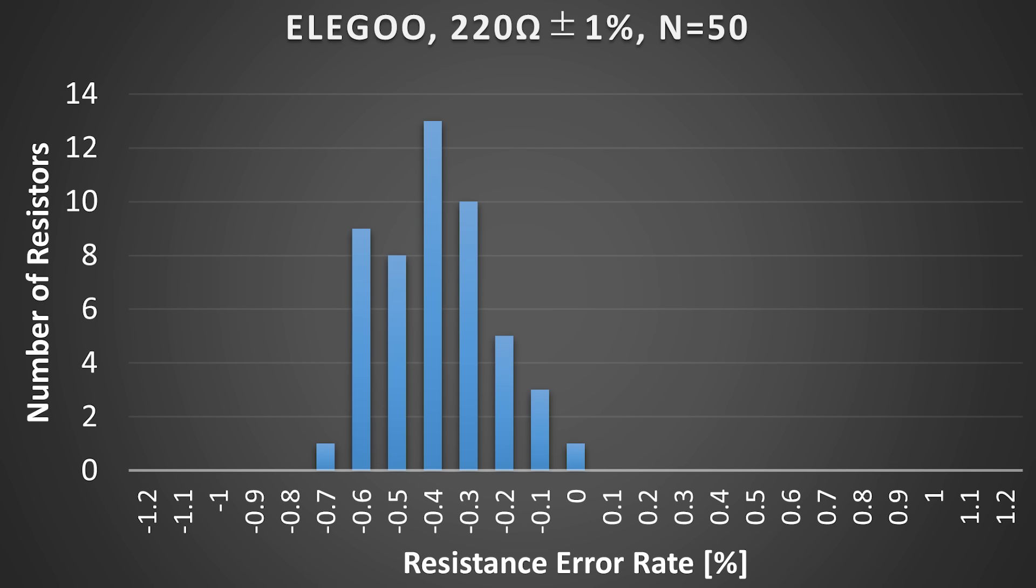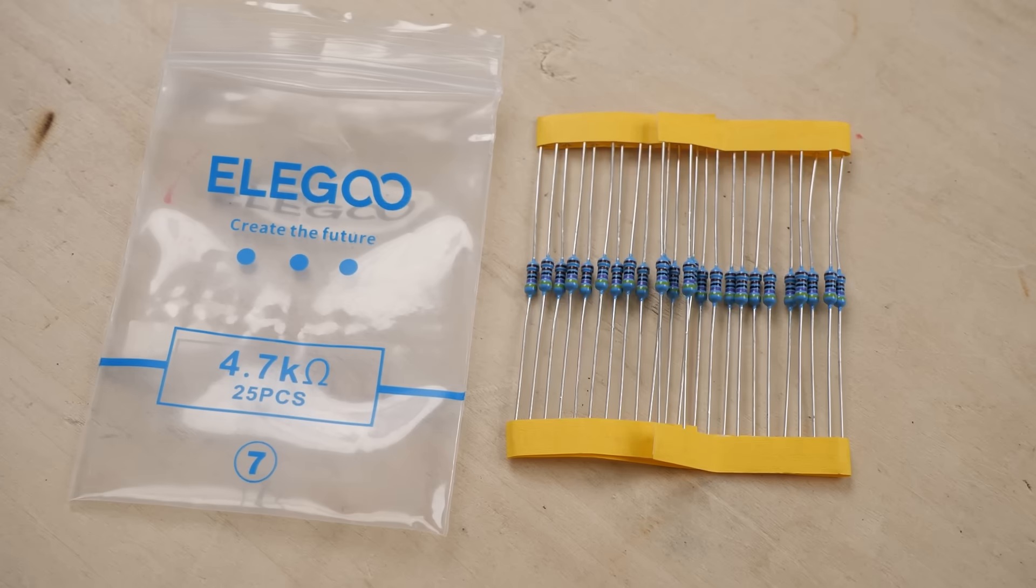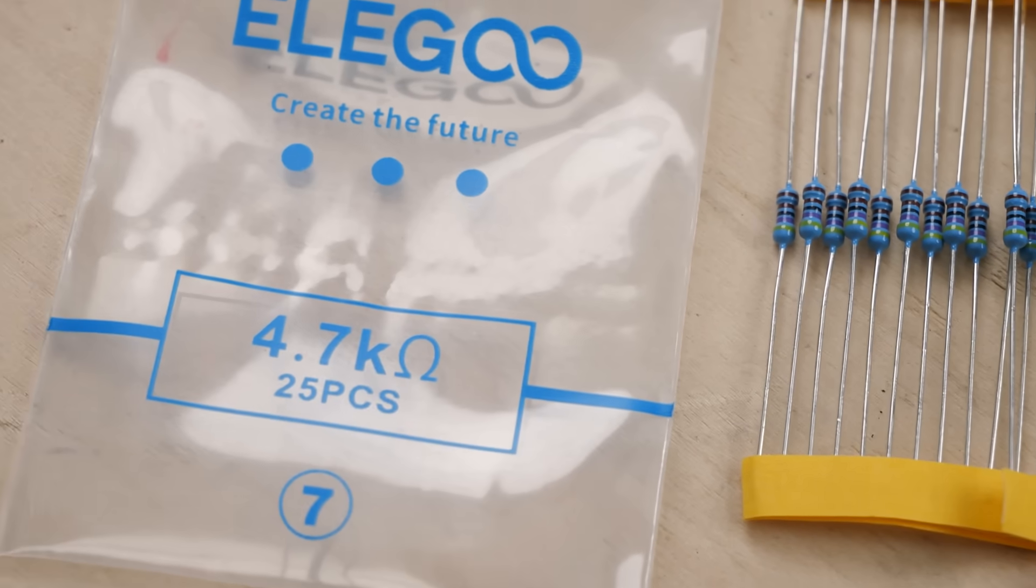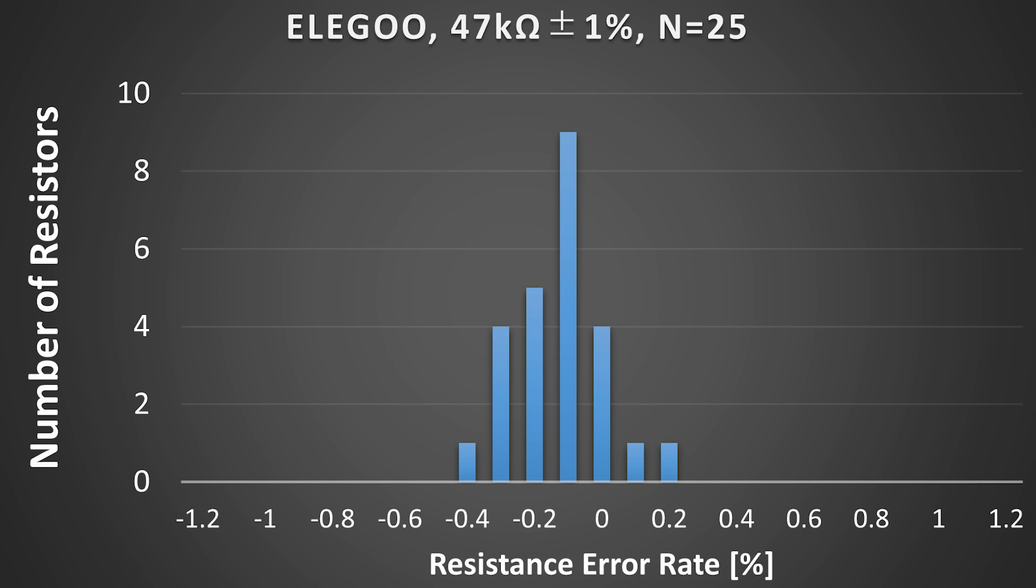After measuring resistance using this jig, I recorded the values using a histogram to see the distribution against the rated tolerance. The horizontal axis represents the error rate. The vertical axis represents the number of resistors with each error rate. All the resistors from Elegoo have resistance error rate within the range of plus or minus 1%. There were only 50 samples, but the histogram shows a normal distribution. With this little number of samples, I can't say for sure, but Elegoo's products seem to be stable in quality. These are 220-ohm resistors. I did the same experiment on 1-kilo-ohm and 47-kilo-ohm resistors. They were also within the range of plus or minus 1%. The graph shows a normal distribution.